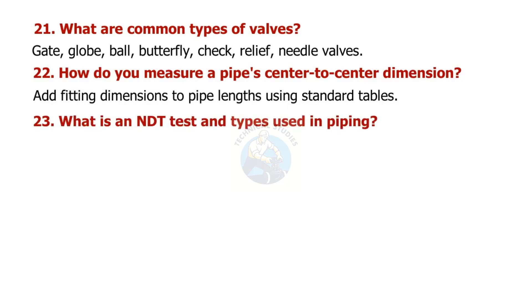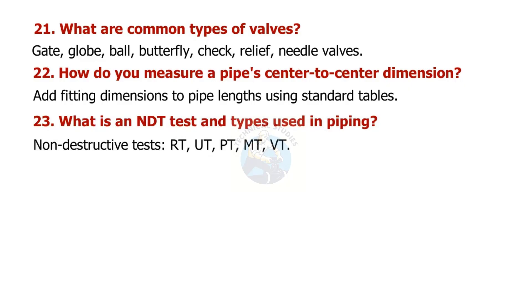What is an NDT test and what types are used in piping? NDT stands for non-destructive testing. Common types include RT (radiographic testing), UT (ultrasonic testing), PT (penetrant testing), MT (magnetic particle testing), and VT (visual testing).